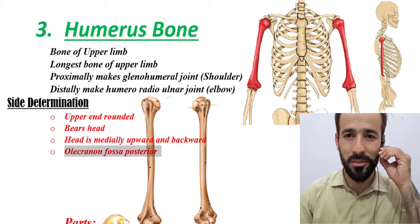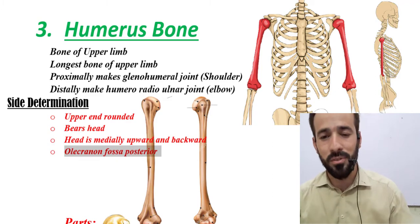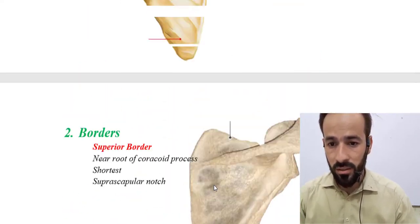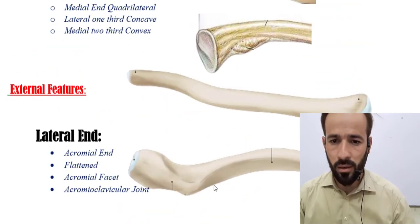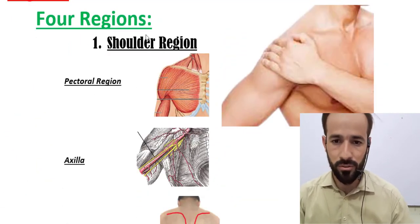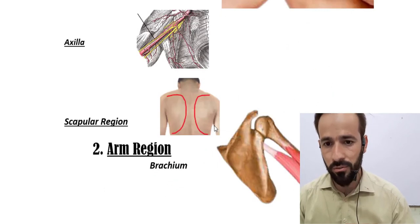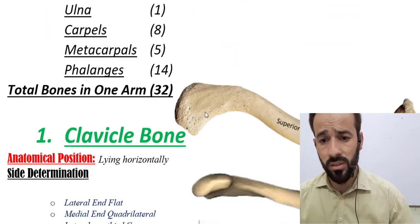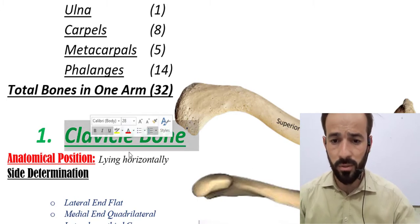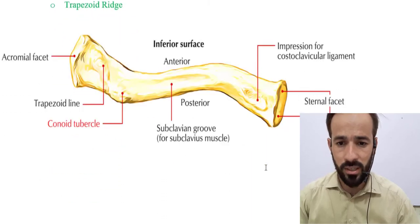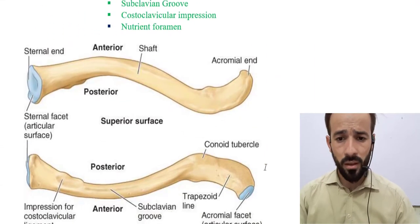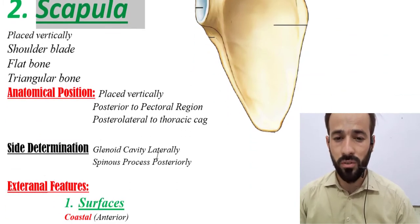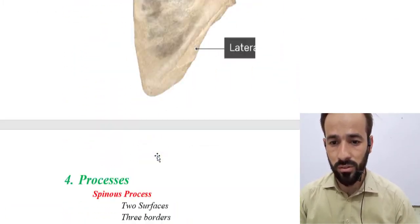Welcome back. As you know, we are discussing the bones of the upper limb. We discussed the divisions of the upper limb — the shoulder region, arm region, forearm region, and hand region. We then discussed the bones, starting with the clavicle bone, followed by the anatomy and external features of the scapula.